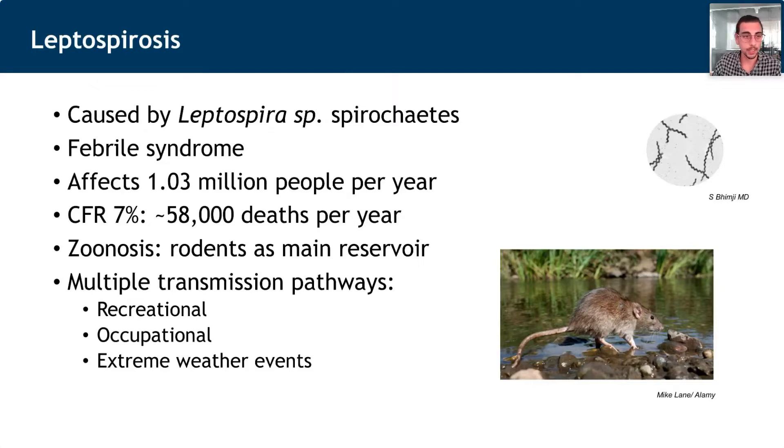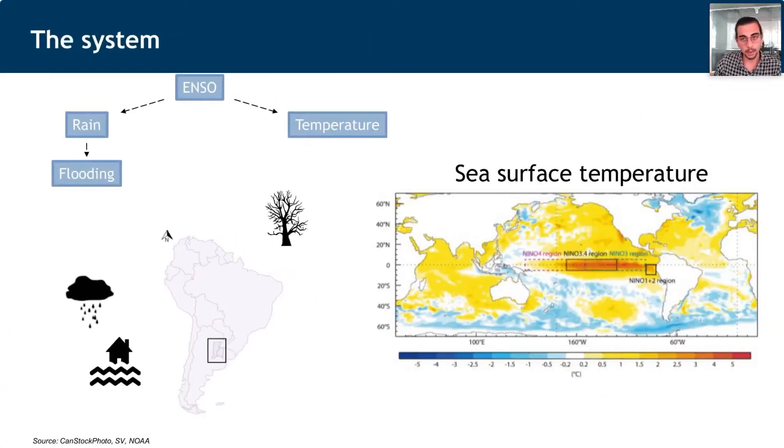In the context of this study, I'm going to focus mostly on the occupational side and extreme weather events. To understand how people end up getting infected and why leptospirosis is climate sensitive, we need to understand how the climate pattern is influenced in South America, particularly by the El Niño Southern Oscillation, a coupled ocean-atmosphere pattern characterized by two distinct phases: El Niño and La Niña. They tend to influence the amount of precipitation in specific areas and also temperature.